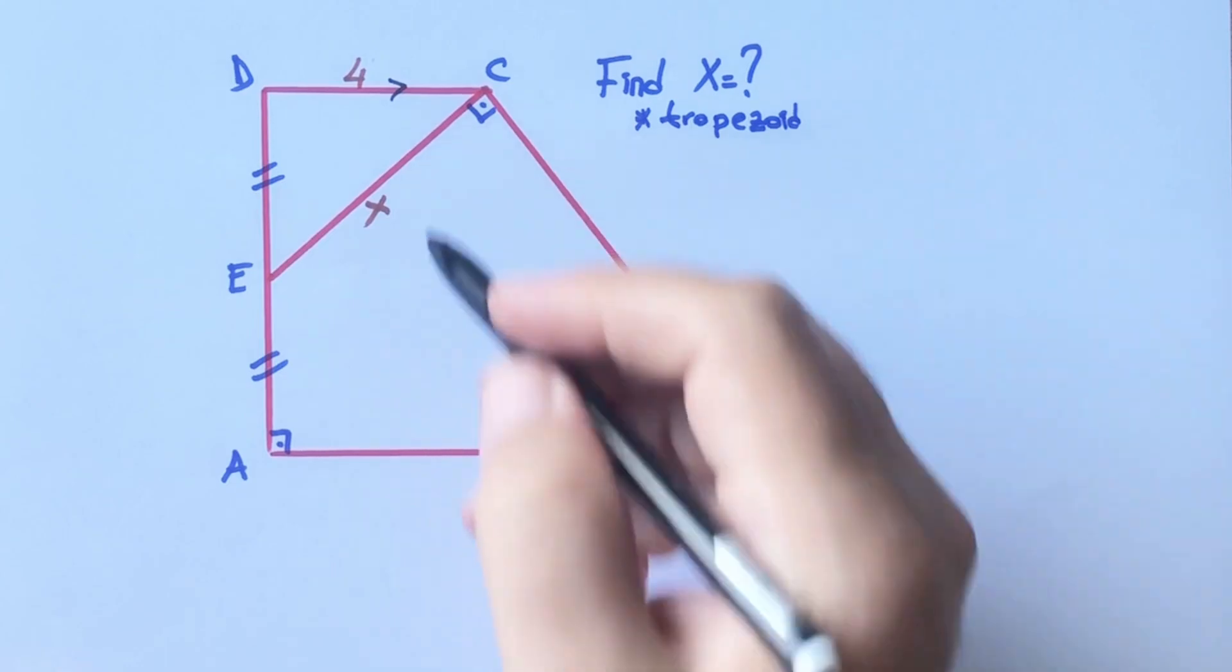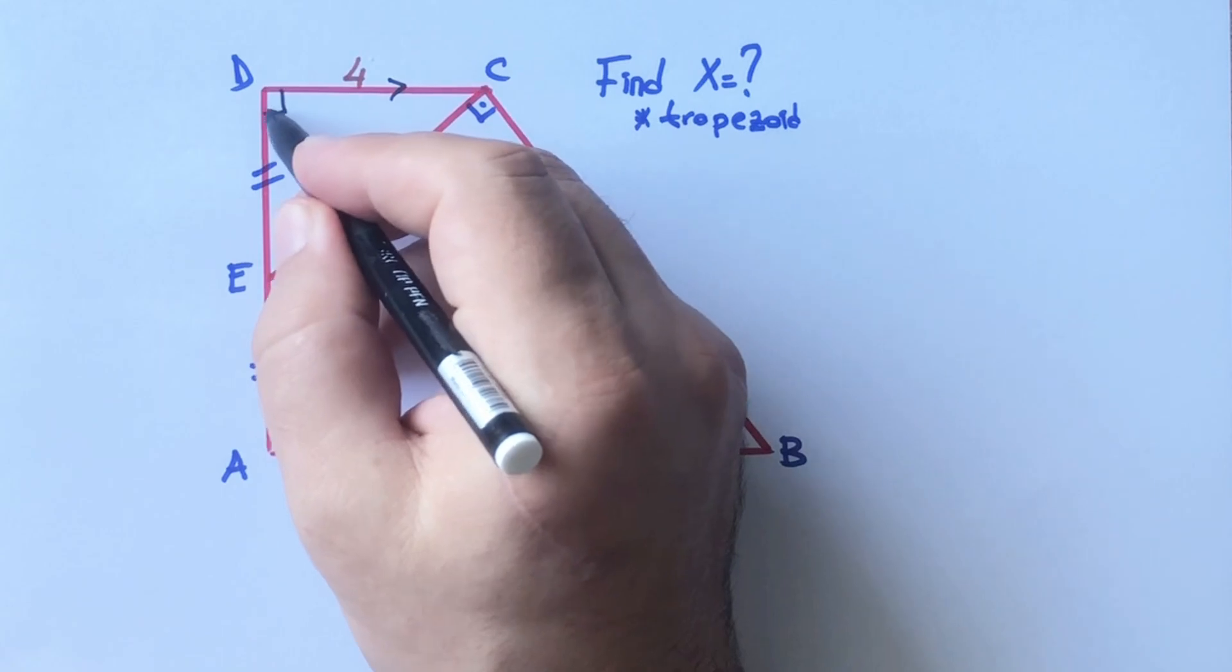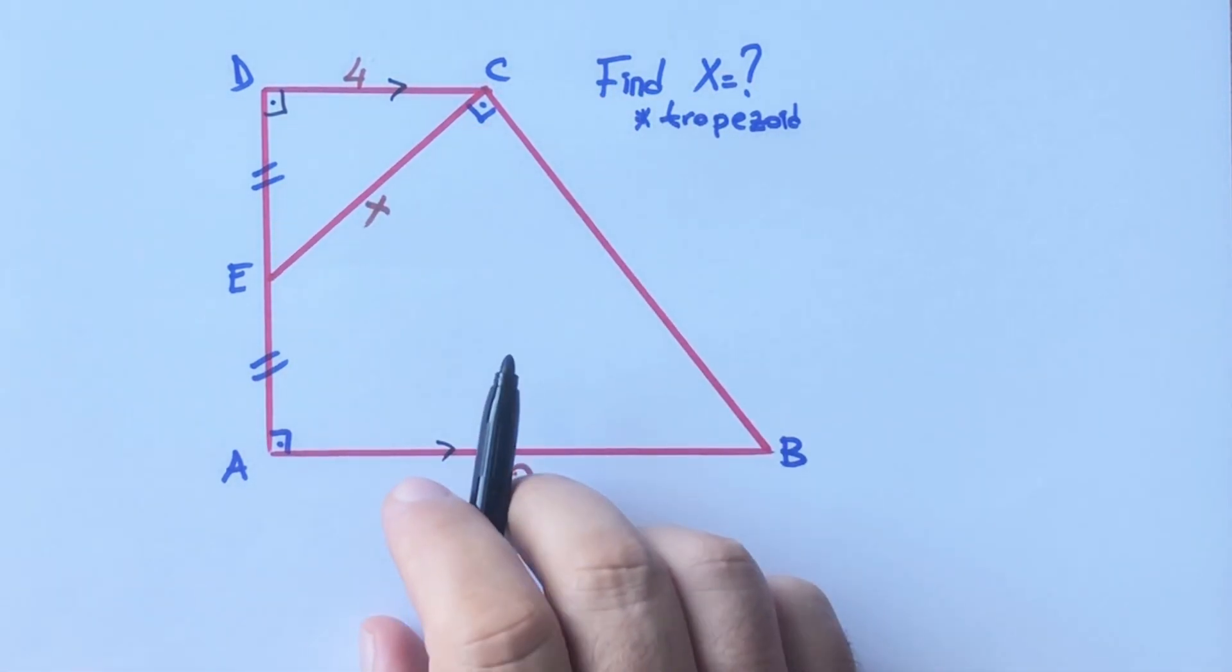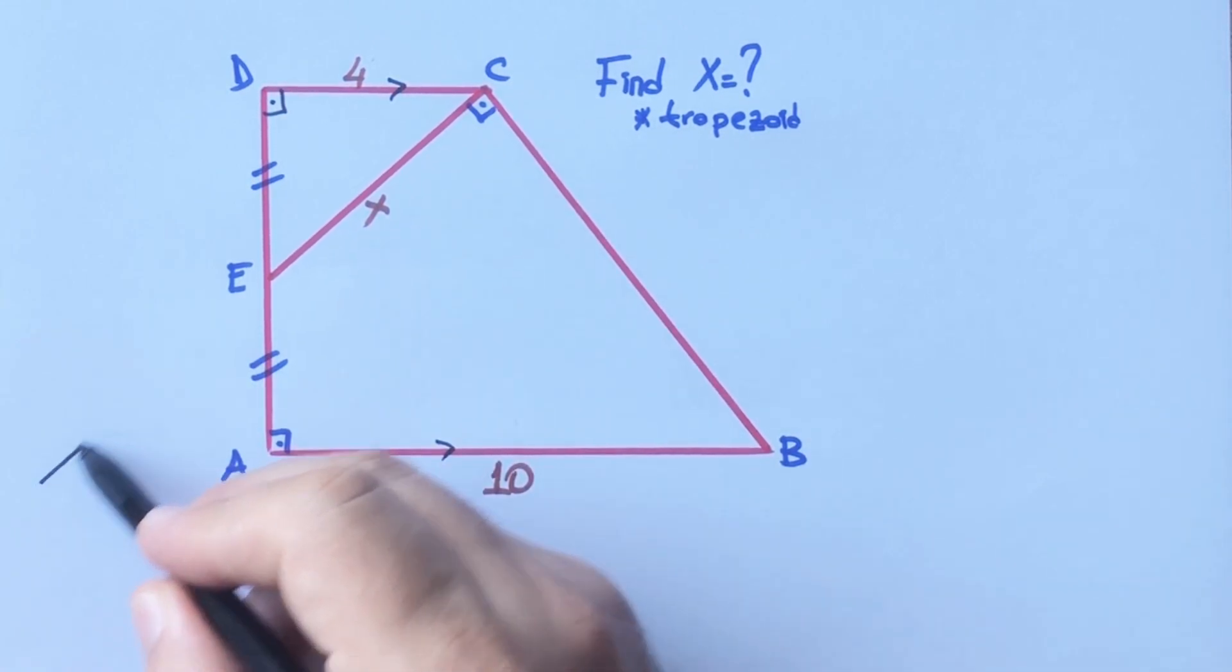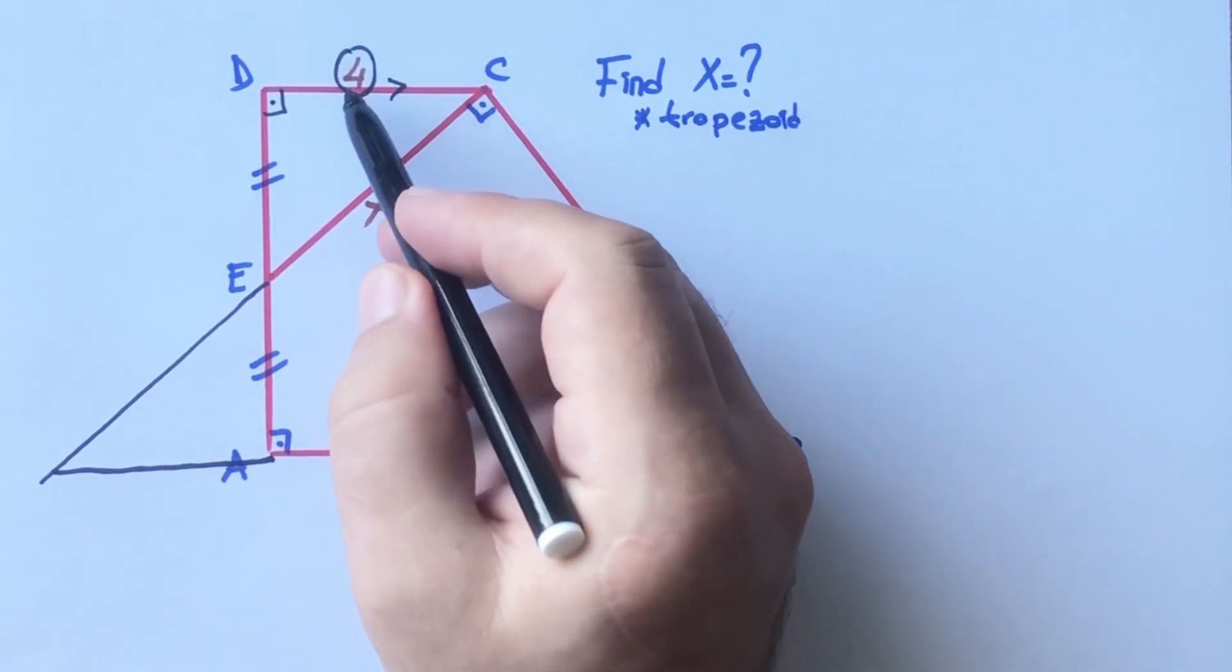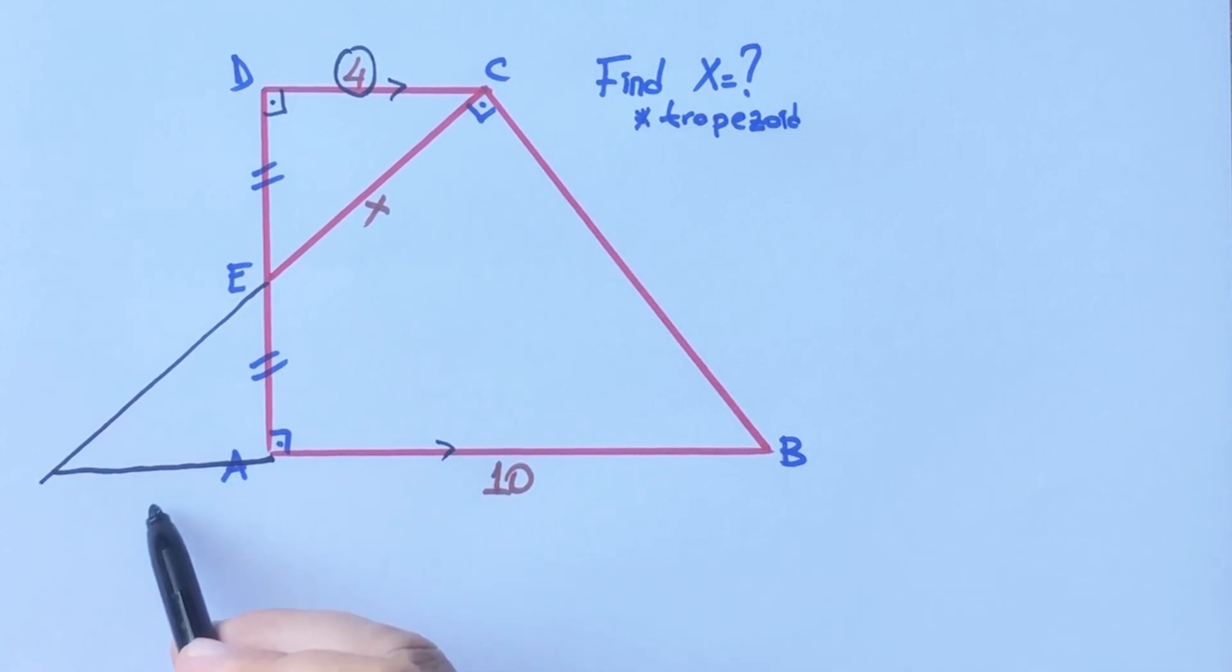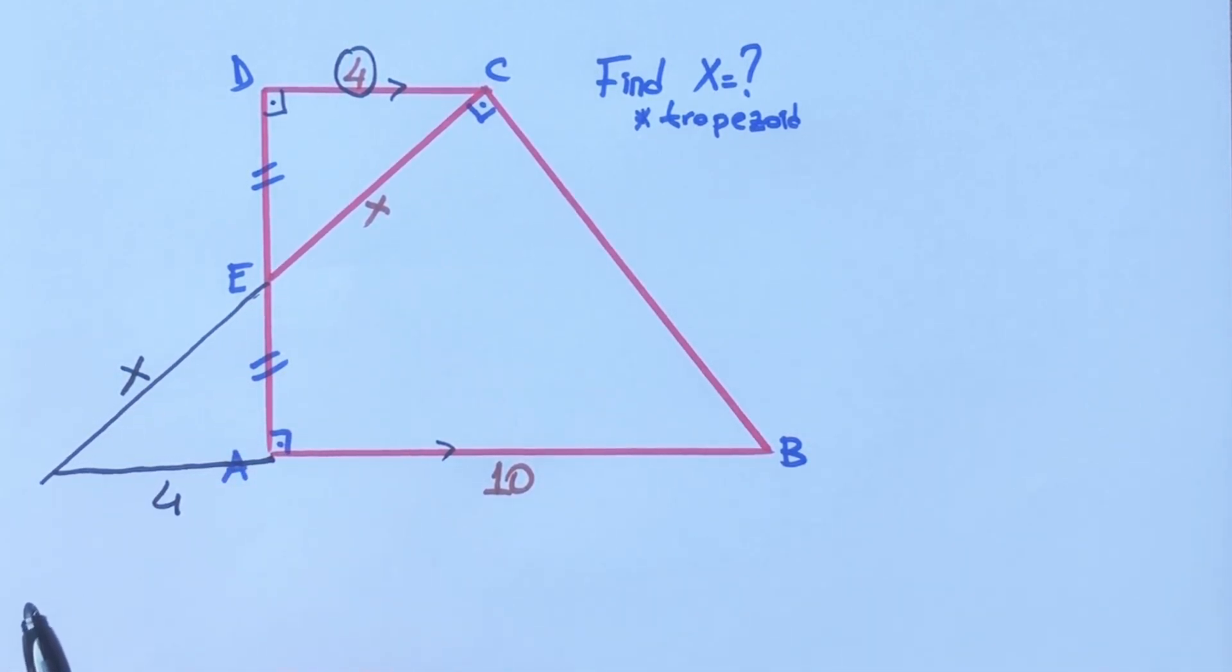First step, we know that in a trapezoid these two parts must be parallel, therefore here must be 90 degrees. If we extend this corner and connect here, if here is 4 units, this length must be 4 units, and if it is x, this part must be x units, because of similarity.